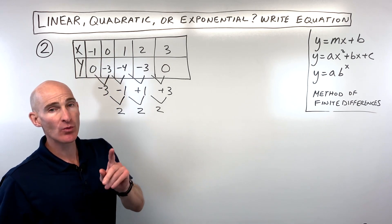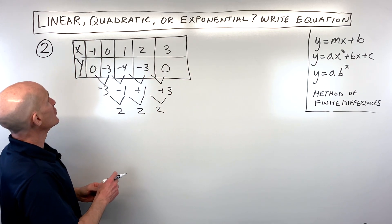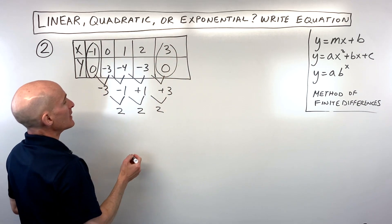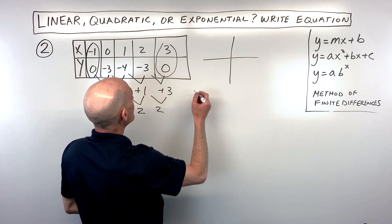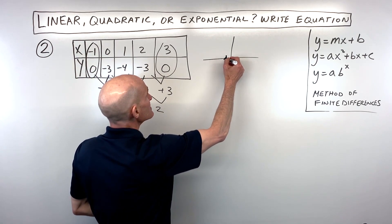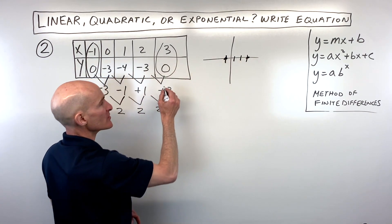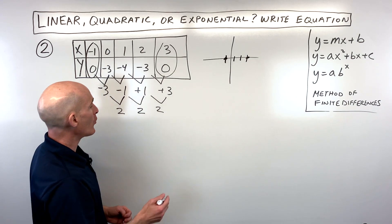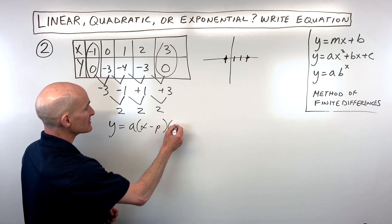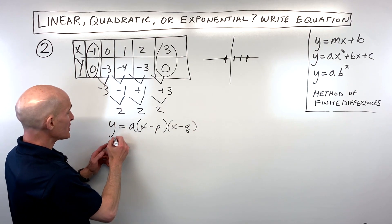There are a couple of ways to find the equation from the table. One way is to make a system of equations and solve for a, b, and c. Another way is to look at the zeros. The zeros are where the y value equals 0 — in this case at x equals negative 1 and x equals positive 3. We can use the intercept form: y equals a times (x minus p) times (x minus q), where p and q are the x-intercepts or zeros.